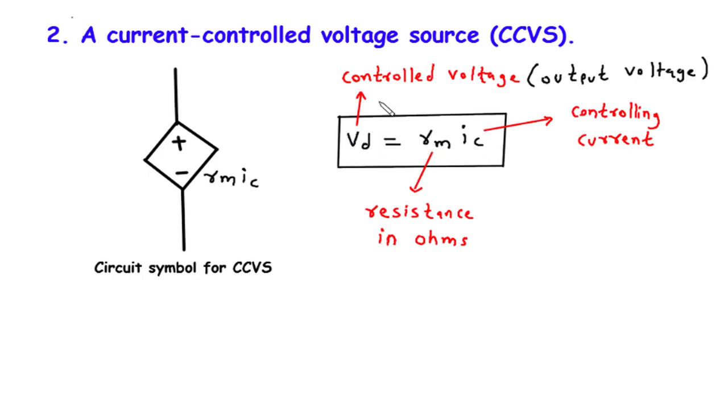Here, VD represents the controlled voltage, and IC denotes the controlling current. The proportionality constant RM is the resistance in ohms associated with the CCVS.